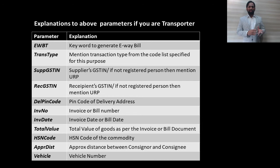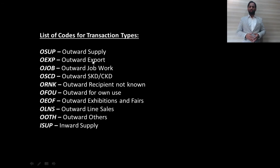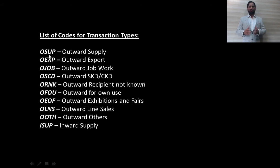Coming to transaction types — as I mentioned, you have to put the transaction type code. For example: is it an outward supply? Is it export? Is it for job work? For a normal regular supply or sale, you put OSUP. For exports, OEXP. And so on — the full list of codes is shown on your screen.